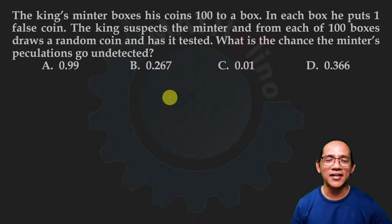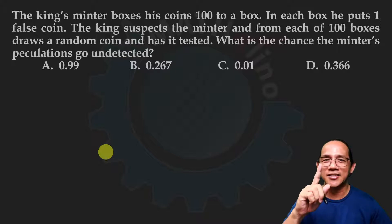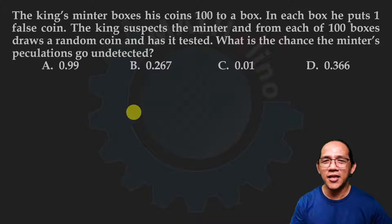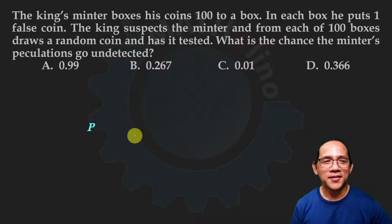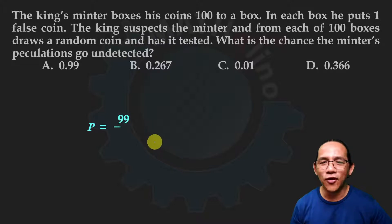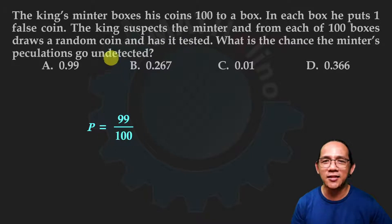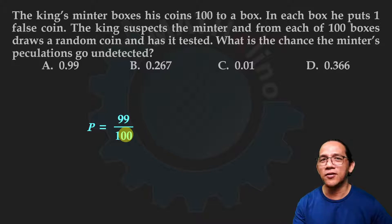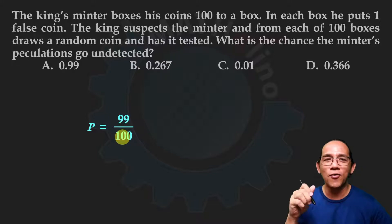This problem is actually easy once you understand the situation. We analyze the probability that the minter is not caught in just one box. For him not to be detected in one box, the king must have drawn from the 99 genuine coins out of 100 — so the probability is 99/100 per box. For the second box, it's also 99/100; for the third, the same, and so on up to the 100th box. So we multiply 99/100 by itself 100 times: (99/100)^100.